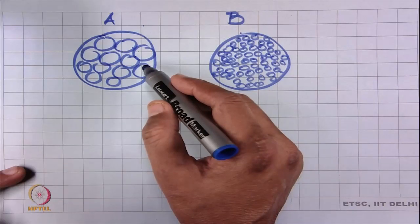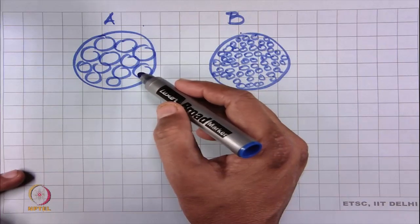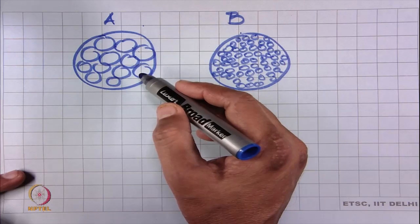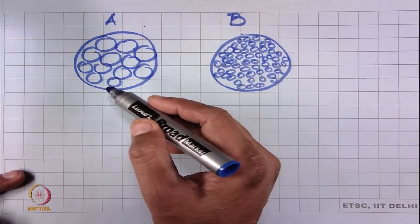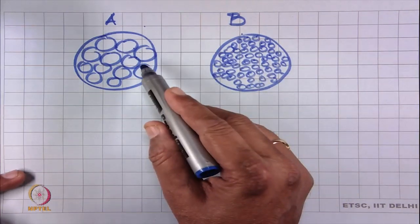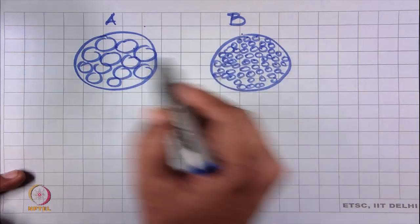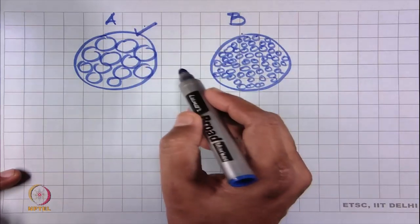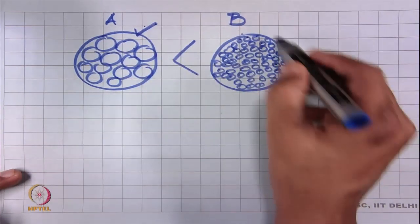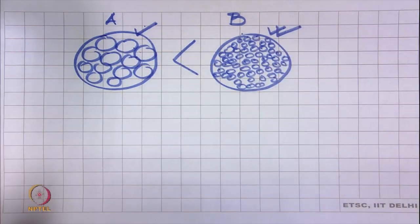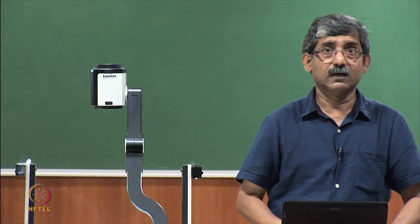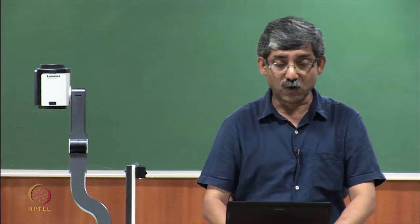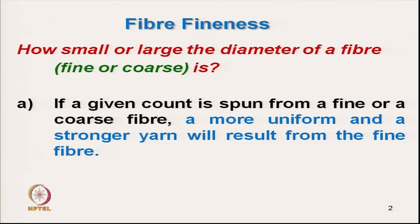Comparing yarn A and yarn B, yarn B has more fibres and therefore higher fibre-to-fibre contact area, whereas yarn A with coarser fibres has much less contact area. For staple fibre yarn, strength comes only from friction. So yarn A will have lower strength, while yarn B will have higher strength and lower irregularity — higher uniformity. It is obvious that finer fibre yields a stronger and more uniform yarn, making it very important to know the diameter of fibre.